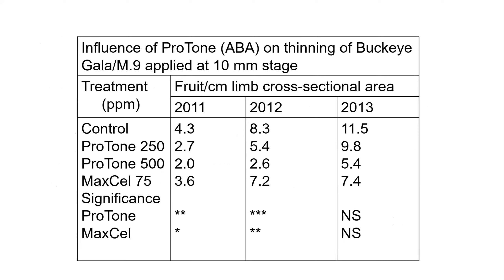In 2011, it worked quite well — the set was generally very low, showing some over-thinning, and MaxCel worked but not quite as well as Proton. In 2012, it worked reasonably well and both were significant. In 2013, results weren't statistically significant, but thinning responses were still observed. I should emphasize these were applied at the 10-millimeter stage on Buckeye Gala, which I consider a difficult cultivar to thin — so these data actually look pretty good.